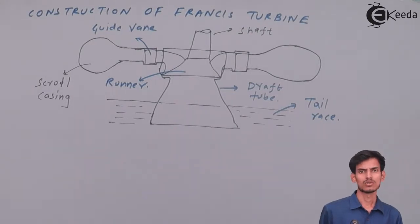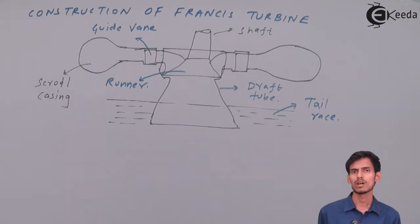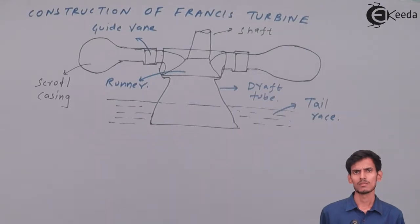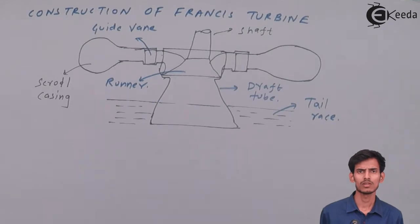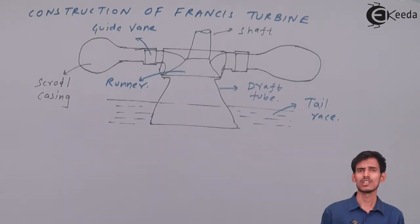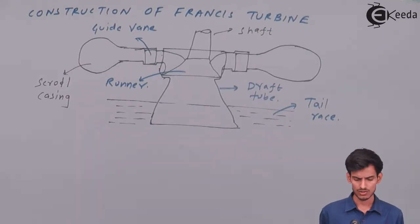There are no nozzles in this turbine, and the turbine is completely sealed — no air leakage is allowed because pressure energy is available here. Unlike Pelton wheel which can have an open structure since no pressure is involved, here the scroll casing is always full of water under pressure. Any leakage would result in pressure loss and ultimately a loss in the efficiency of the turbine.